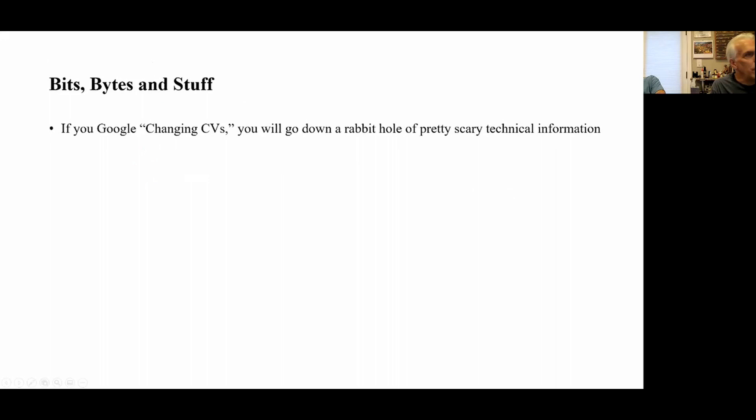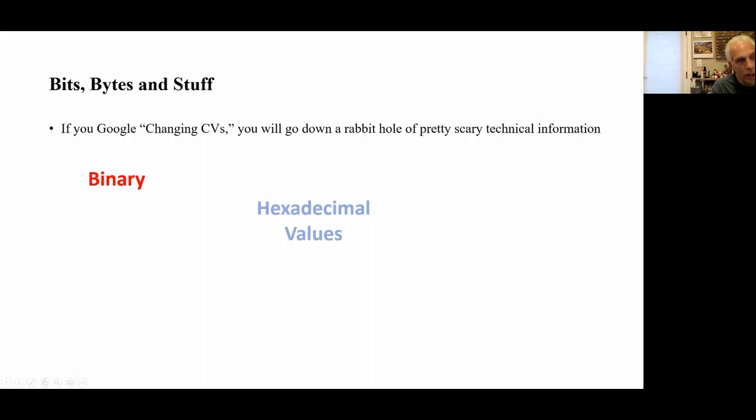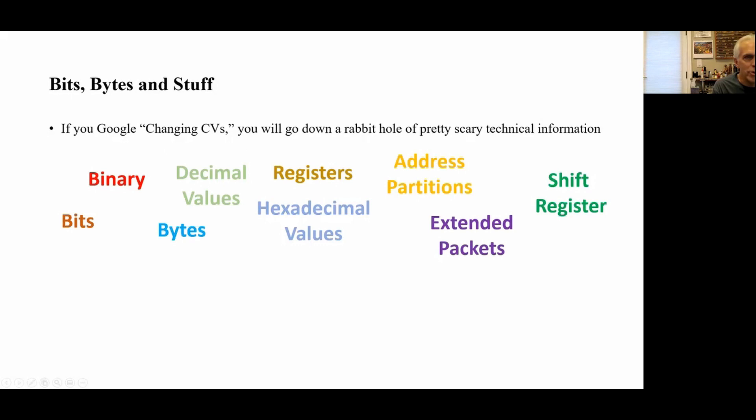Let's talk a little bit about bits and bytes. We're going to talk about changing CVs. If you go out and Google changing model railroad CVs, you're going to go down a rabbit hole — pretty scary technical information. You're going to be seeing things about binary, hexadecimal values, bits, address partitions, decimal values, bytes, extended packets, registers, and shift registers.